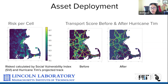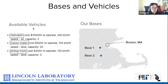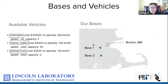Here you can see the transport score before and after the hurricane — Cape Cod, as well as a large portion of the Boston area, was negatively affected by Hurricane Tim. For available vehicles, we decided to use the 20 tractor trailers that we were given because it was the most optimal way by cost and has the most capacity relative to the helicopter and pickup truck, although we sacrifice speed. Base one is closer to the Boston area due to its lower relative social vulnerability index.